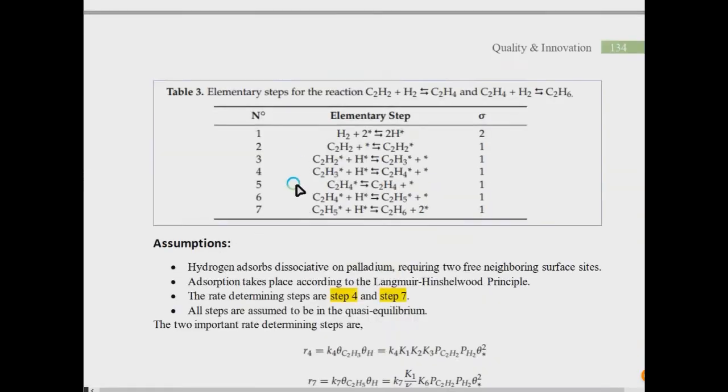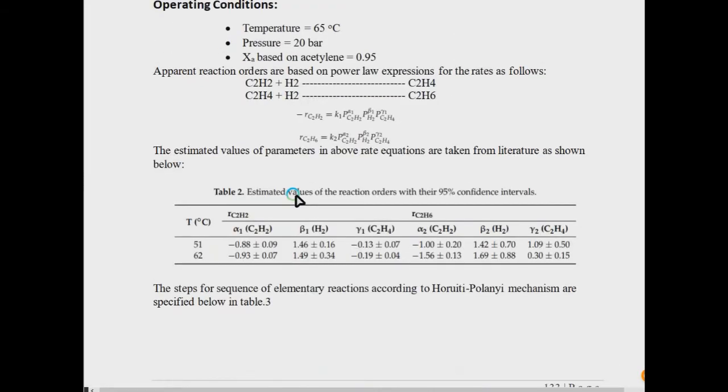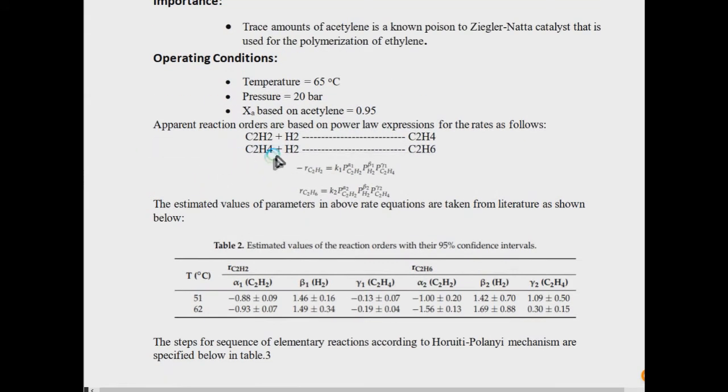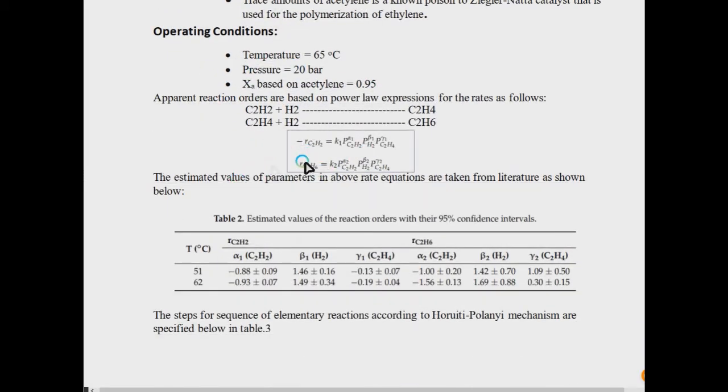There is only a single formula for the design: W/FA0. For mixed flow reactors, W/FA0 equals XA over minus rA. But in the case of plug flow type reactor, or fixed bed catalytic which is analogous to plug flow, we use the integral: W/FA0 equals integral of XA over minus rA.